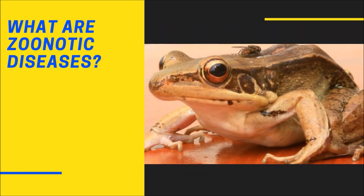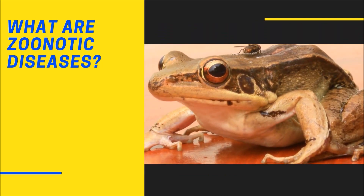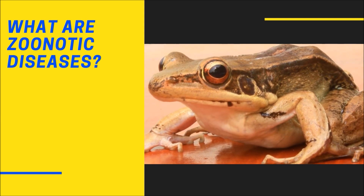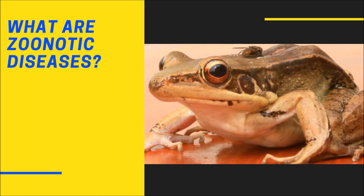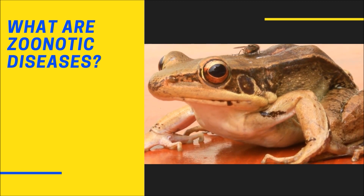Bacteria and other zoonotic contaminants can come from multiple sources. Salmonella has been isolated from amphibians, reptiles, and rodents. However, salmonella can also be contracted from handling eggs, poultry, beef, milk, and vegetables.